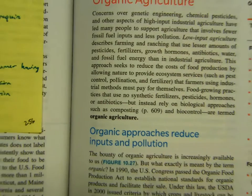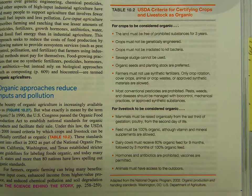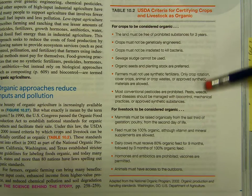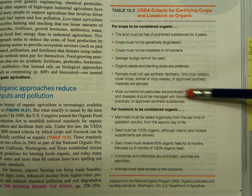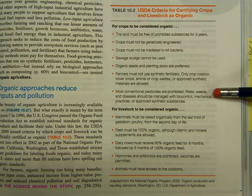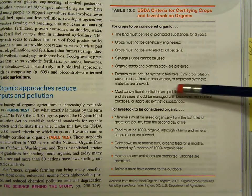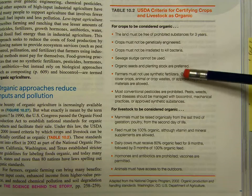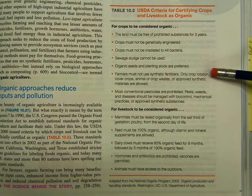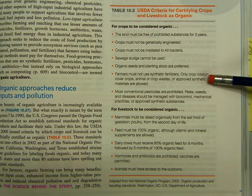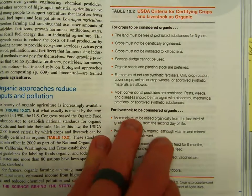Now moving on to organic agriculture. Most conventional pesticides are prohibited. Pests, weeds, and diseases should be managed with biocontrol, mechanical practices, and approved synthetic substances — so they can still use pesticides, but they have to be approved beforehand. They also aren't allowed to use synthetic fertilizer; only crop rotation, cover crops, animal or crop waste, or other approved materials are allowed. This is basically what happens in Biggest Little Farm.